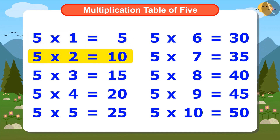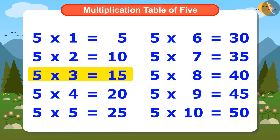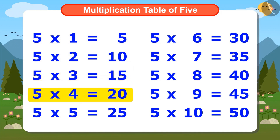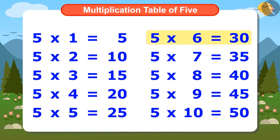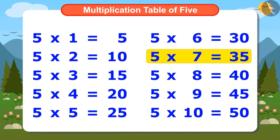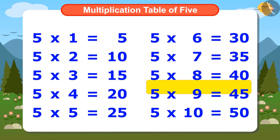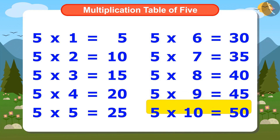5 twos are 10, 5 threes are 15, 5 fours are 20, 5 fives are 25, 5 sixes are 30, 5 sevens are 35, 5 eights are 40, 5 nines are 45, 5 tens are 50.